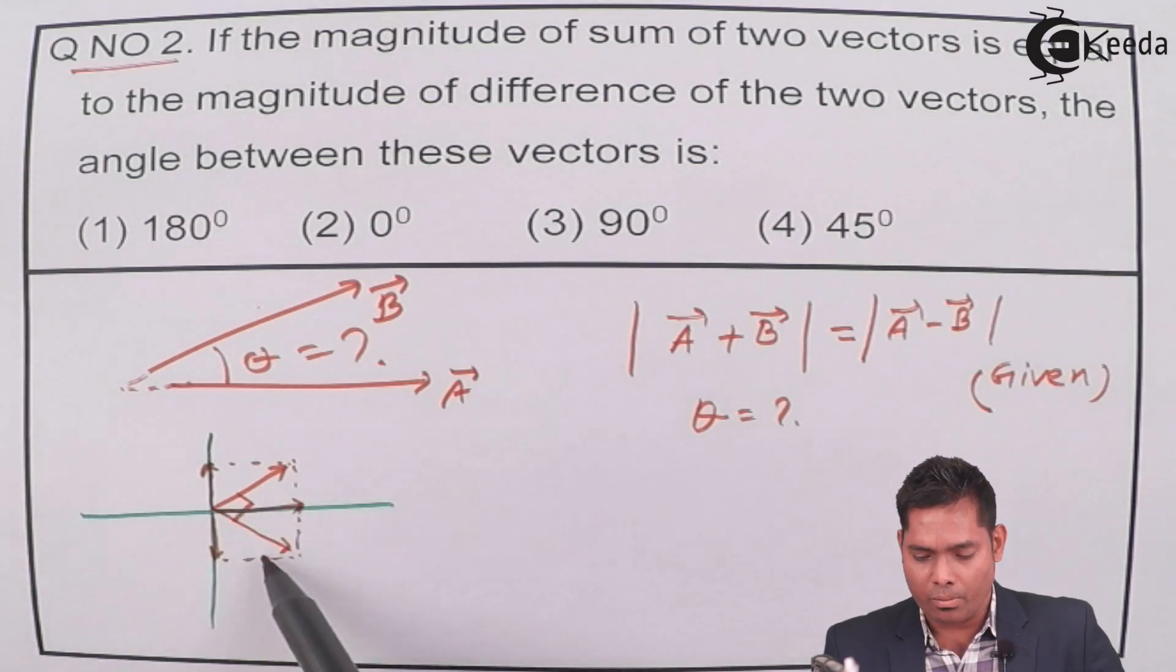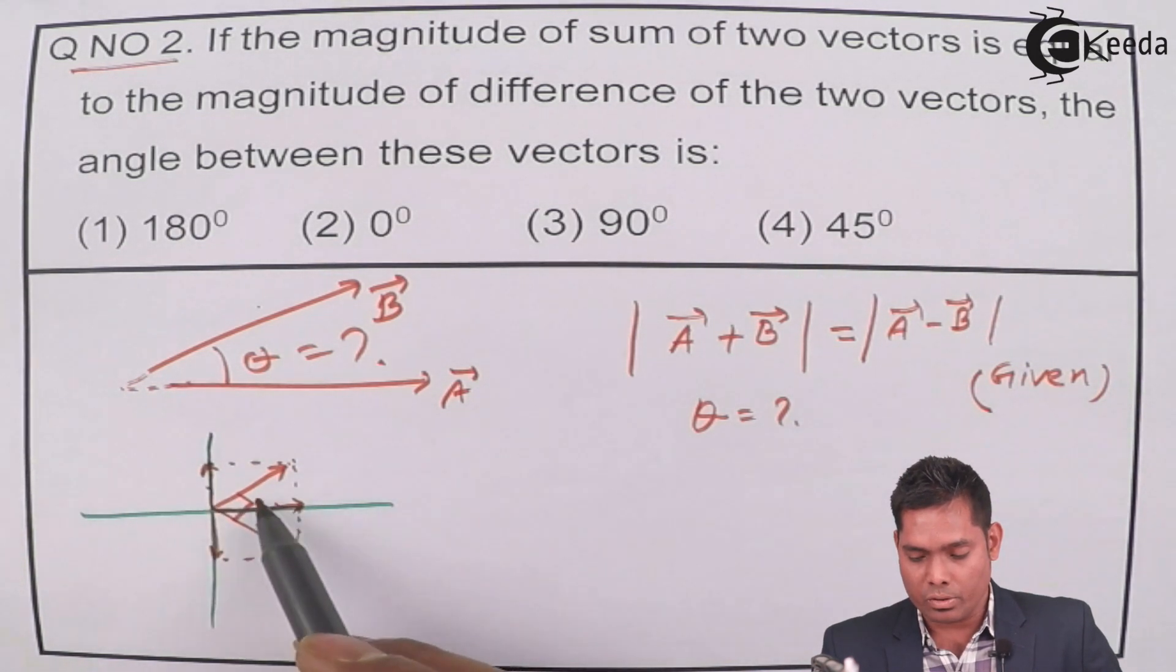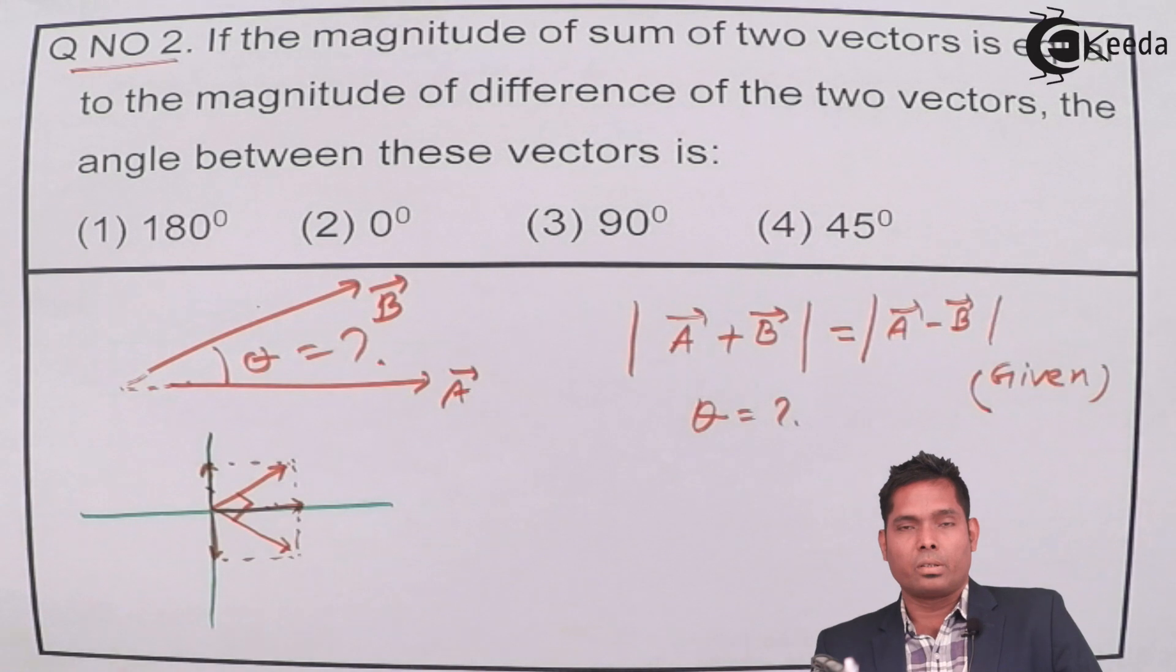and obviously the angle between them, the magnitude is the same. Obviously in this case the magnitude will be same. Then the angle between the two vectors will be 90 degrees.